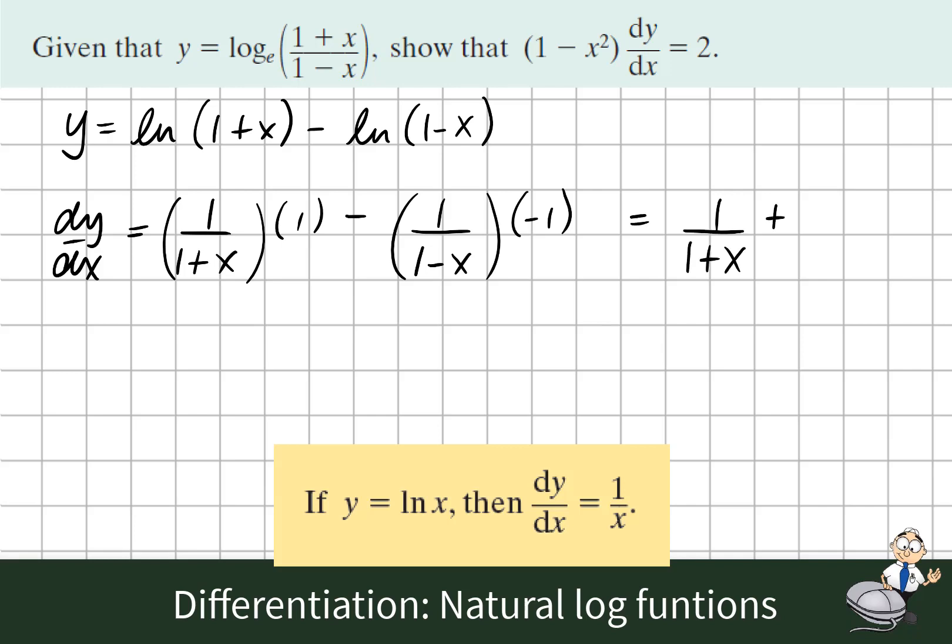And this is the solution. We're just going to add these two fractions here. So to do that we give them a common denominator. So we multiply the first fraction by (1-x) above and below, and the second one by (1+x) above and below.